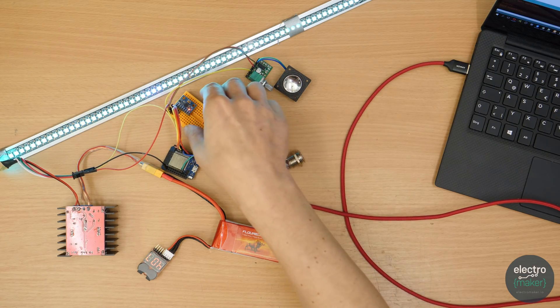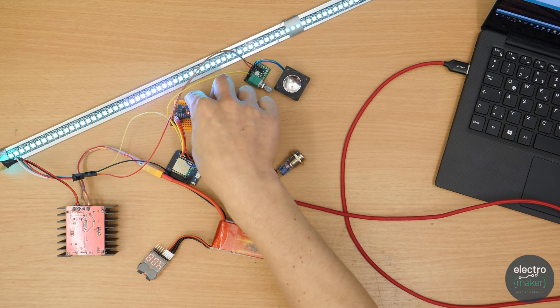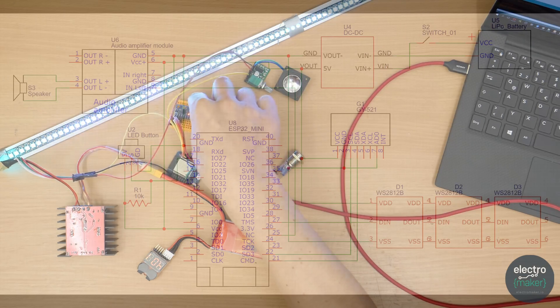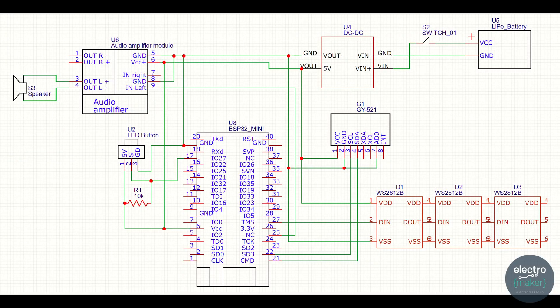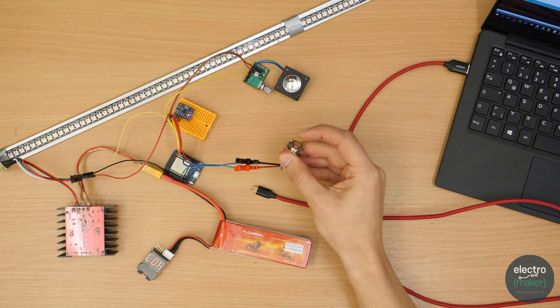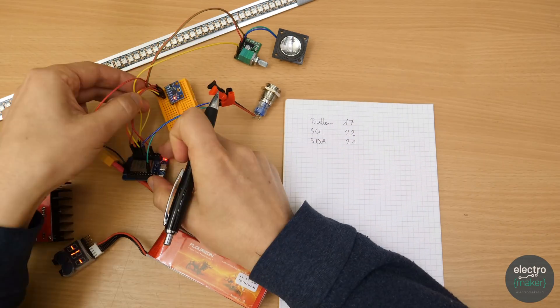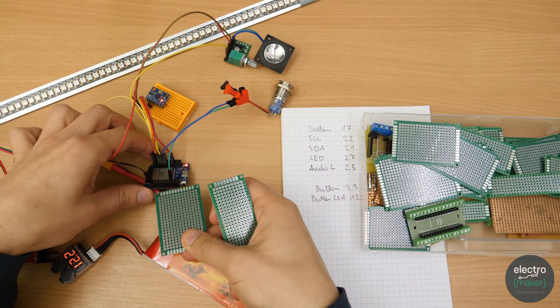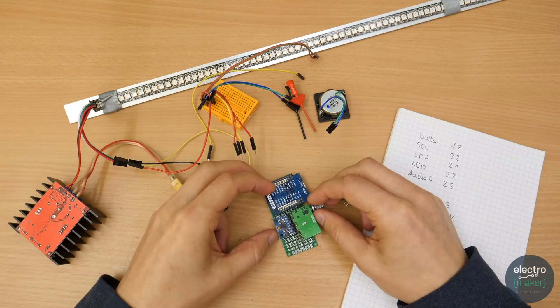First step was to set up a working breadboard prototype. This was easier than expected. This is how every part is connected. Time to transfer it to the final circuit. I used the perfboard as a base and soldered on some headers and connectors.